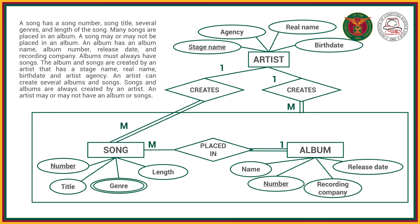For the cardinality, we have many songs placed in an album — that is many-to-one cardinality. We have two relationship types connected to artist. Starting from the one connected to the whole aggregation: we have an artist creates 'song placed in an album.' Songs and albums are always created by an artist, so that has total participation. This is one-to-many cardinality because one artist can create many albums.